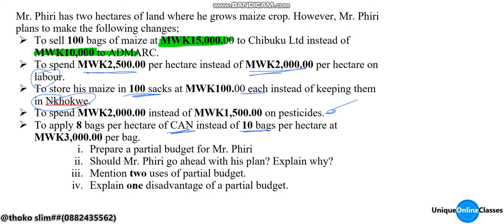We should prepare the budget, and after reviewing the budget, we should determine whether Mr. Piri should go ahead with his plan. We should also explain the uses and advantages of the partial budget.